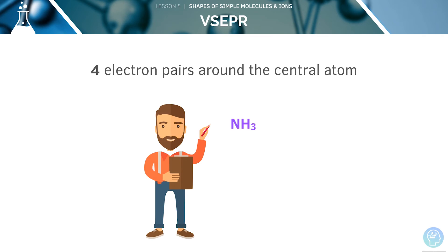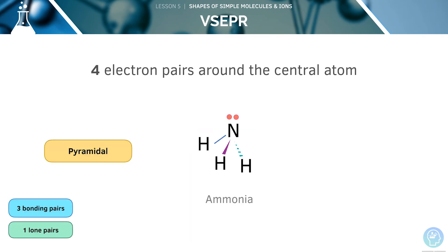Now, let's look at another example with four electron pairs: ammonia. Nitrogen has five outer electrons and is forming three covalent bonds, meaning it has one lone pair and three bonding pairs. The electron pairs will arrange themselves in a tetrahedral fashion, as we saw in methane. But the lone pair is not counted when you describe the shape, so the shape is pyramidal. However, remember that there is more repulsion between a lone pair and a bonding pair than there is between two bonding pairs. This forces the bonding pairs closer together, reducing the angle from 109.5 degrees to 107.